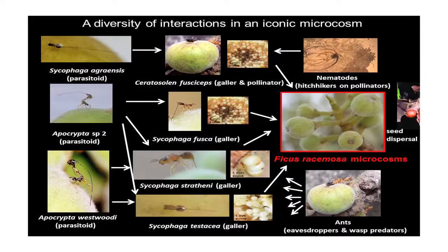The fig wasps enter these nurseries, which are enclosed inflorescences, and they pollinate the fig flowers within these nurseries and also lay eggs within them. Therefore it is a nursery pollination mutualism.